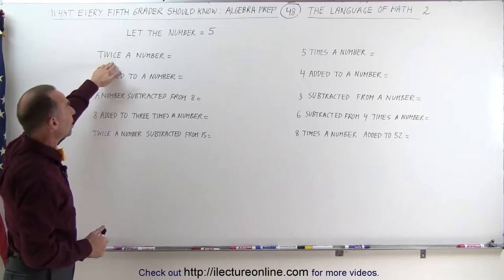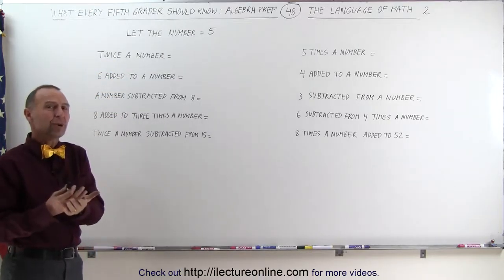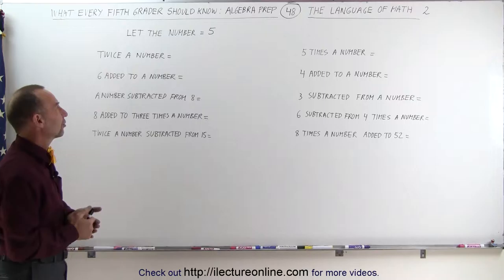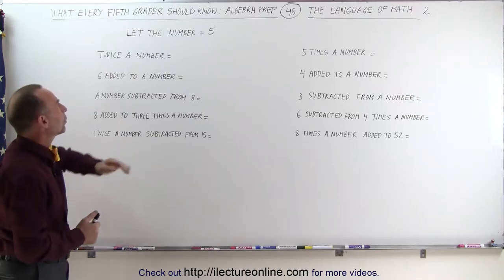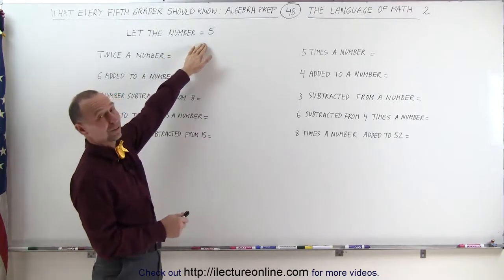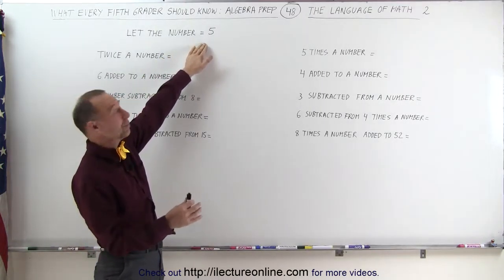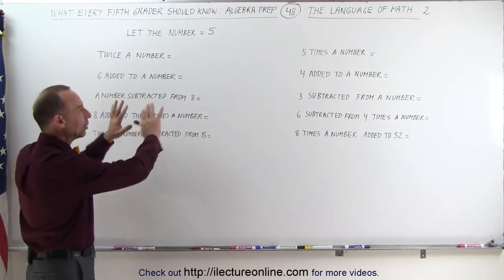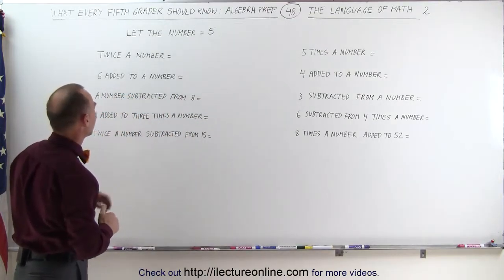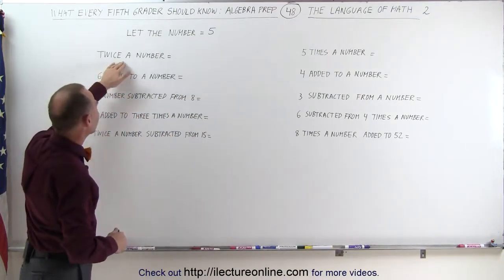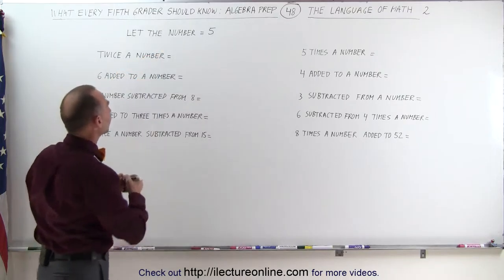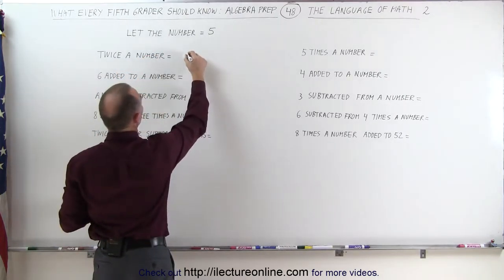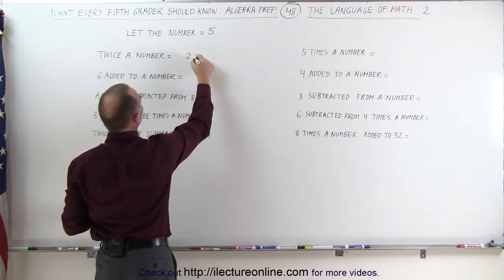Twice a number. In algebra we use an unknown number — we call it x or y or z or something like that. Here we're going to call the unknown number 5, so it's really not unknown, it's a known number. We're going to use that number in all our various expressions. Twice a number — if the number is 5, then twice a number is 2 times that number: 2 times 5.